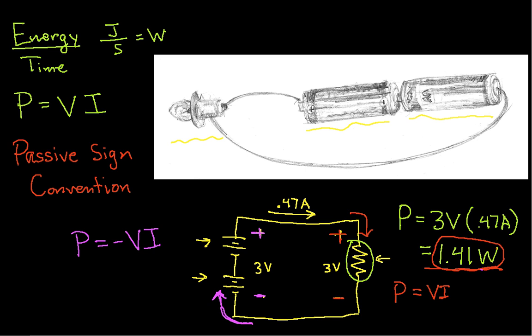So again, this is the passive sign convention, and it allows us to determine whether a component is dissipating or supplying power. So looking at the batteries, if I were to actually continue working this example, I have minus 3 volts times 0.47 amps, and this gives me minus 1.41 watts. And again, what the negative sign means is that the batteries are supplying power to the rest of the circuit.